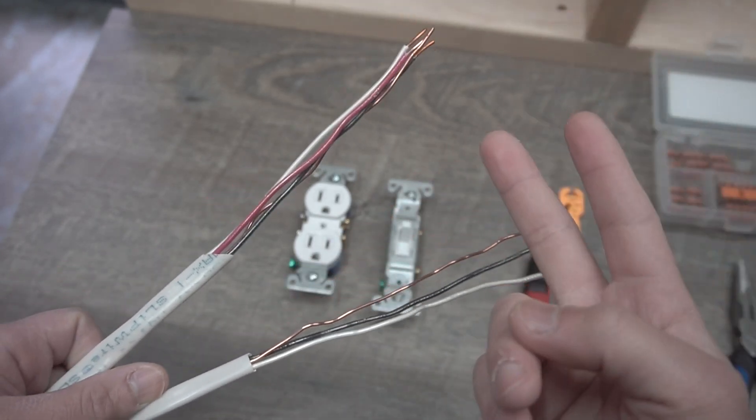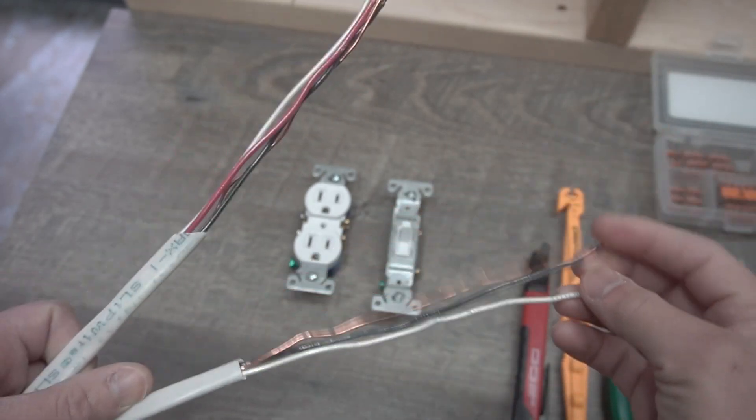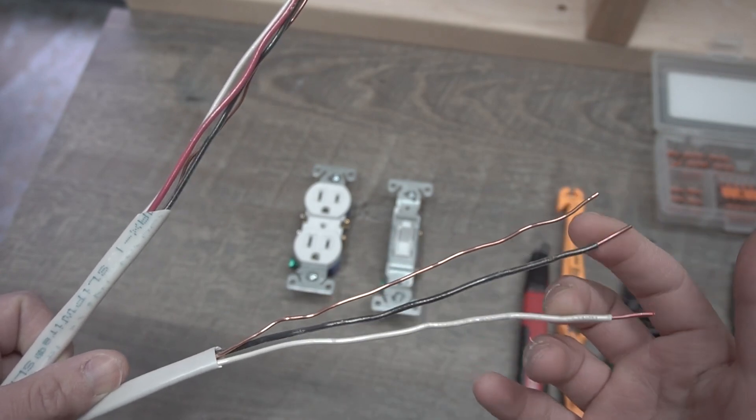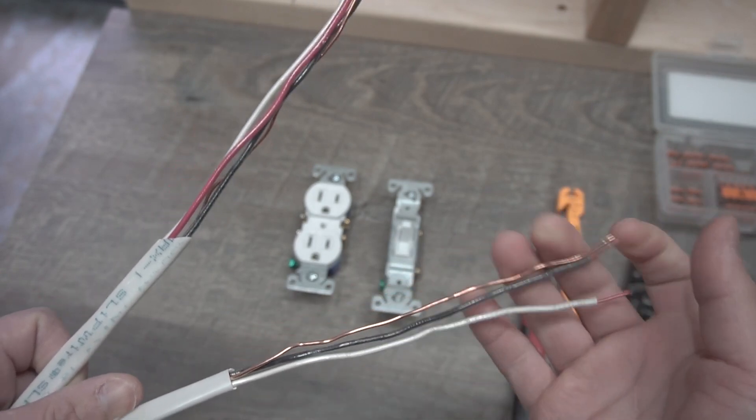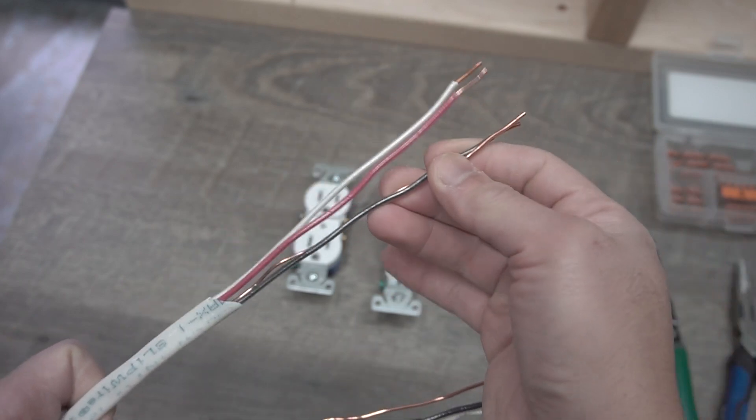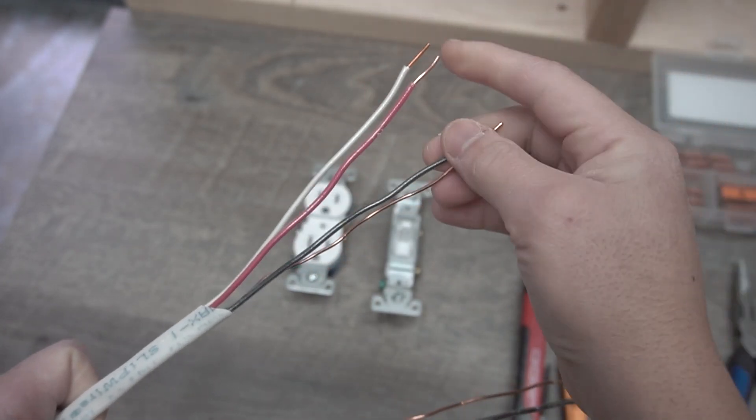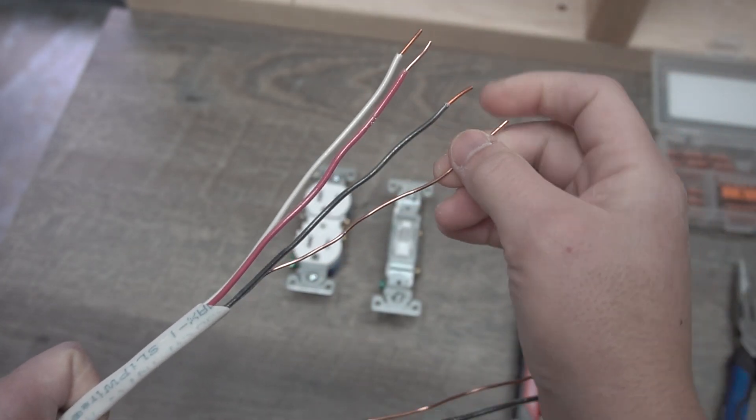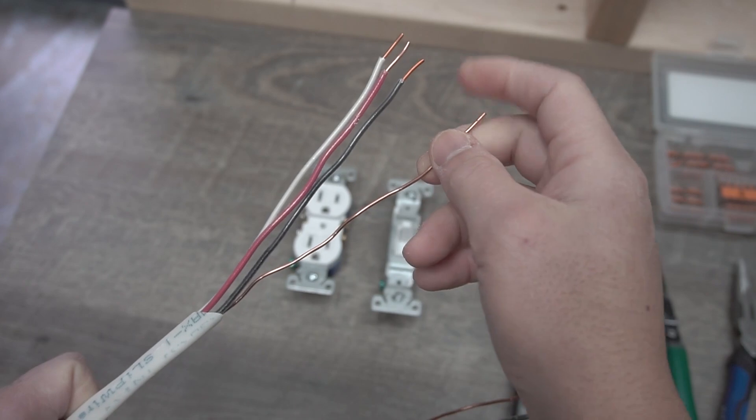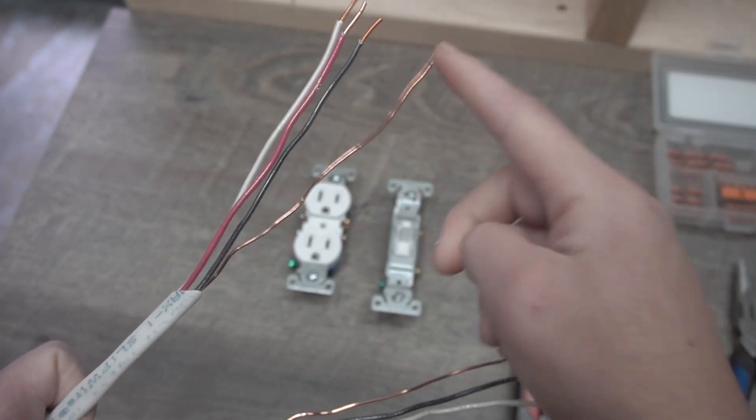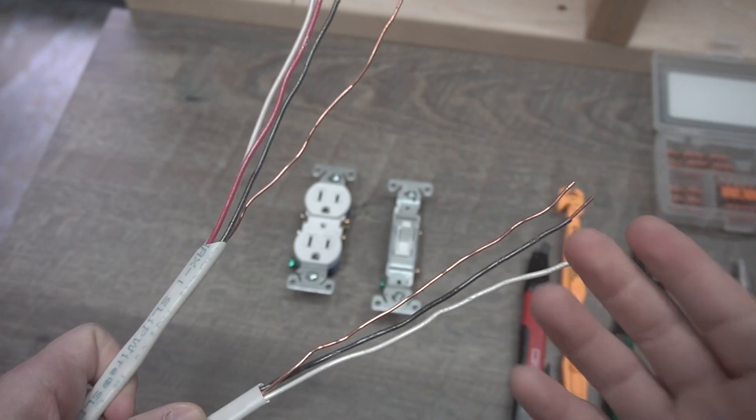We're going to be using two types of wires. We're going to be using a 14-2, which is two conductors, which is the neutral and the hot and one ground, and a 14-3, which is three conductors, which is a neutral, a red which can act as hot, and then you have a hot black right here and a ground wire. If you're using a 12 gauge wire, similar types like this one.